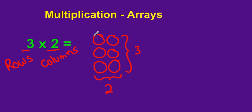Now if we add all of these, we have 1, 2, 3, 4, 5, and 6. So 3 times 2 gives us a total of 6.